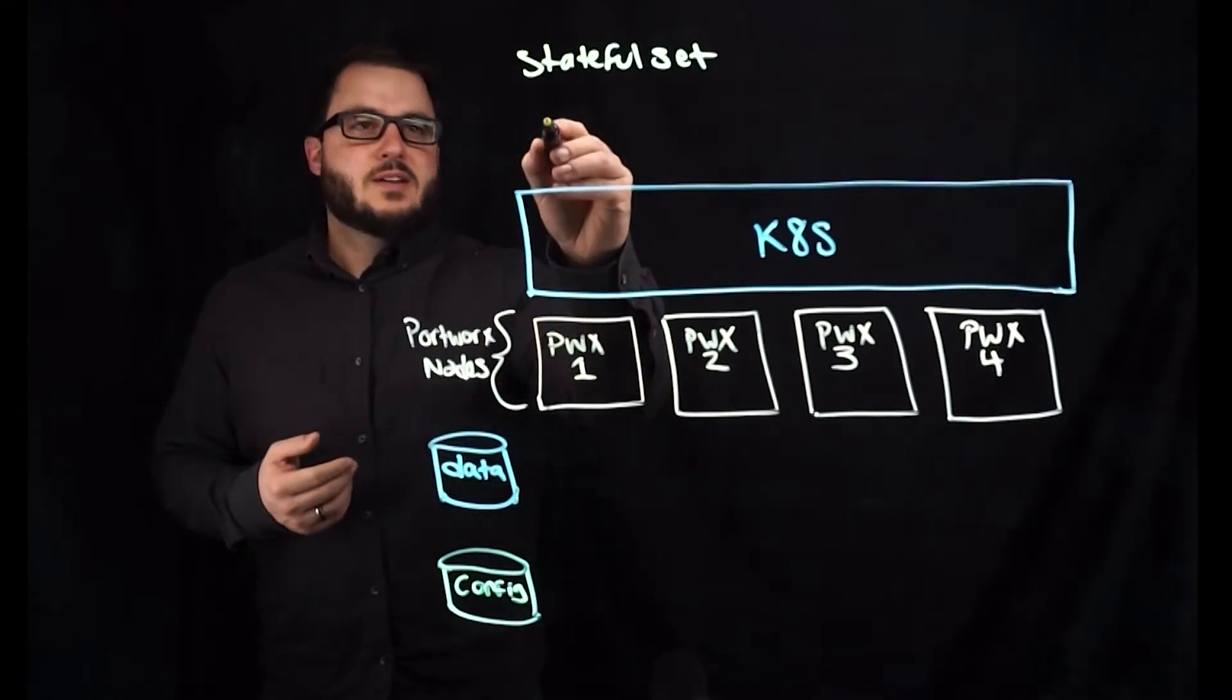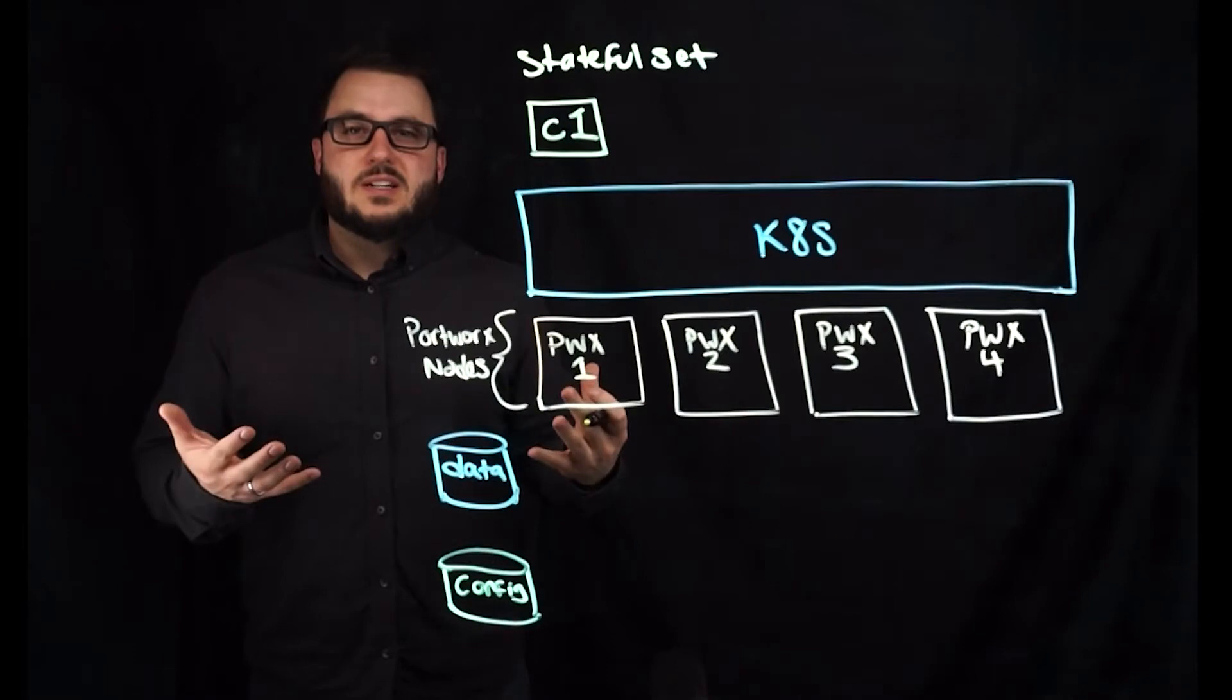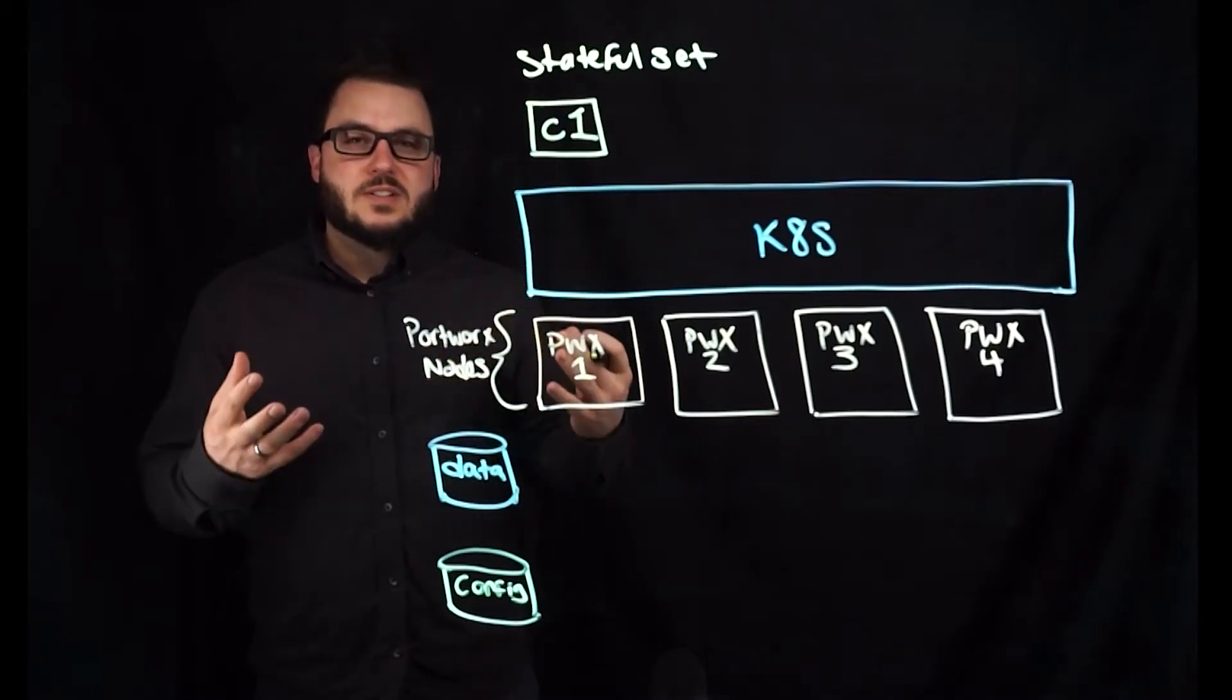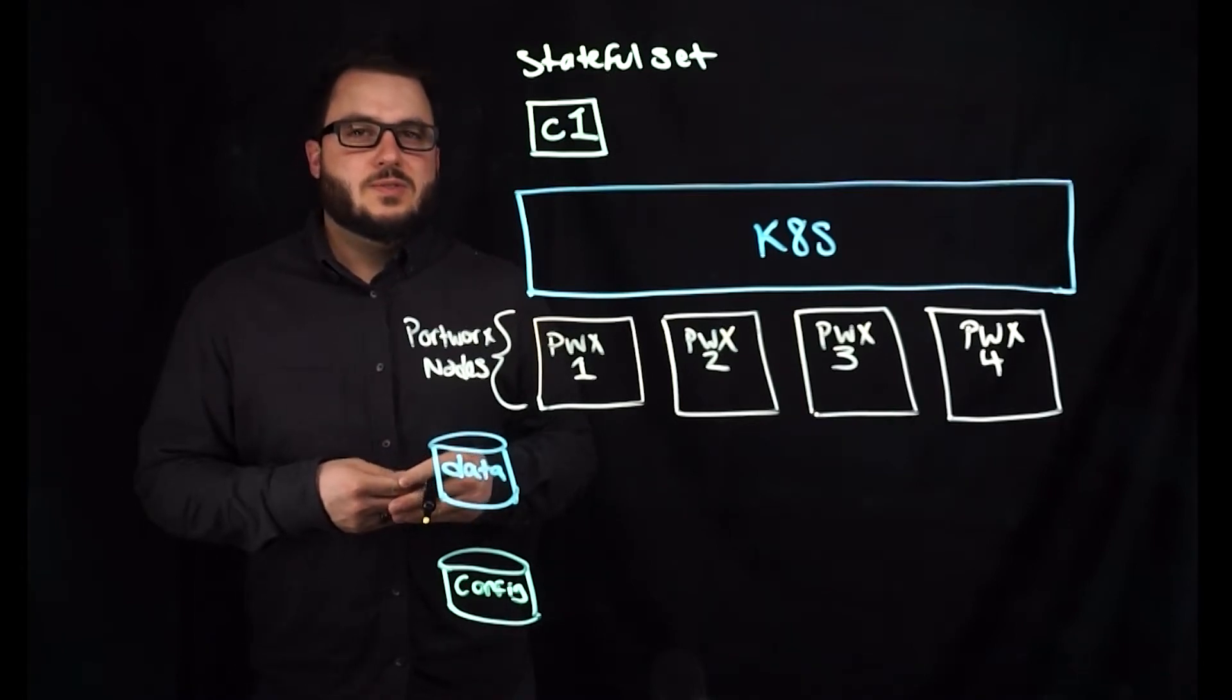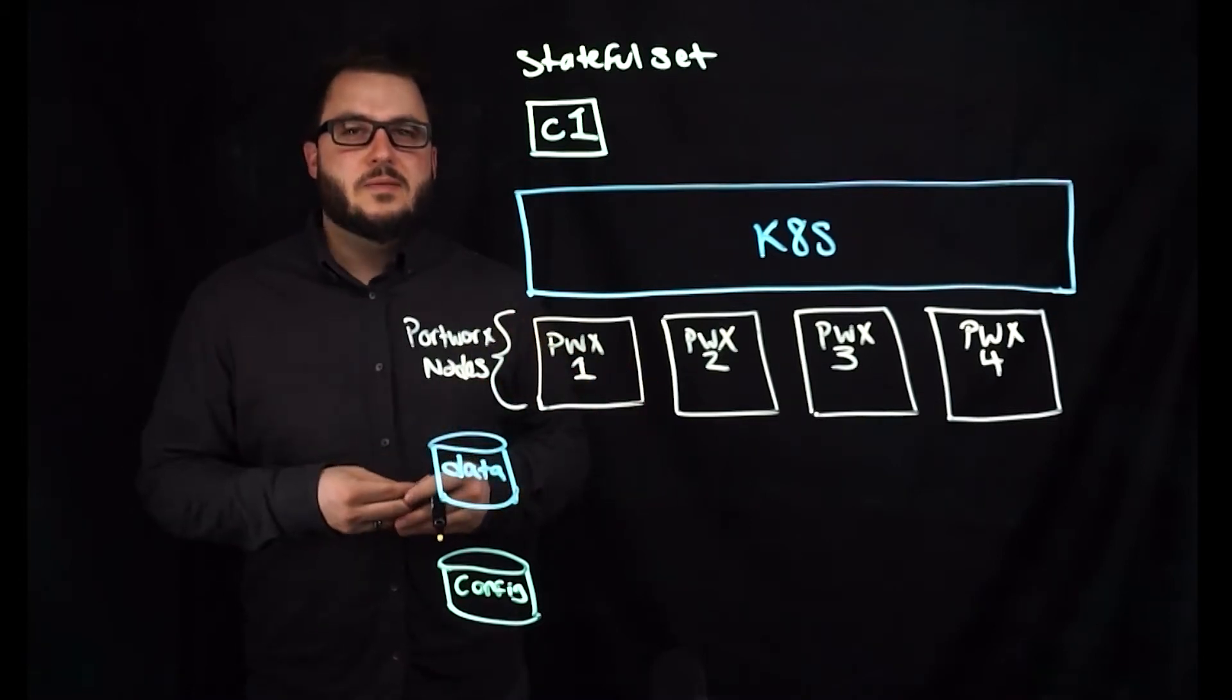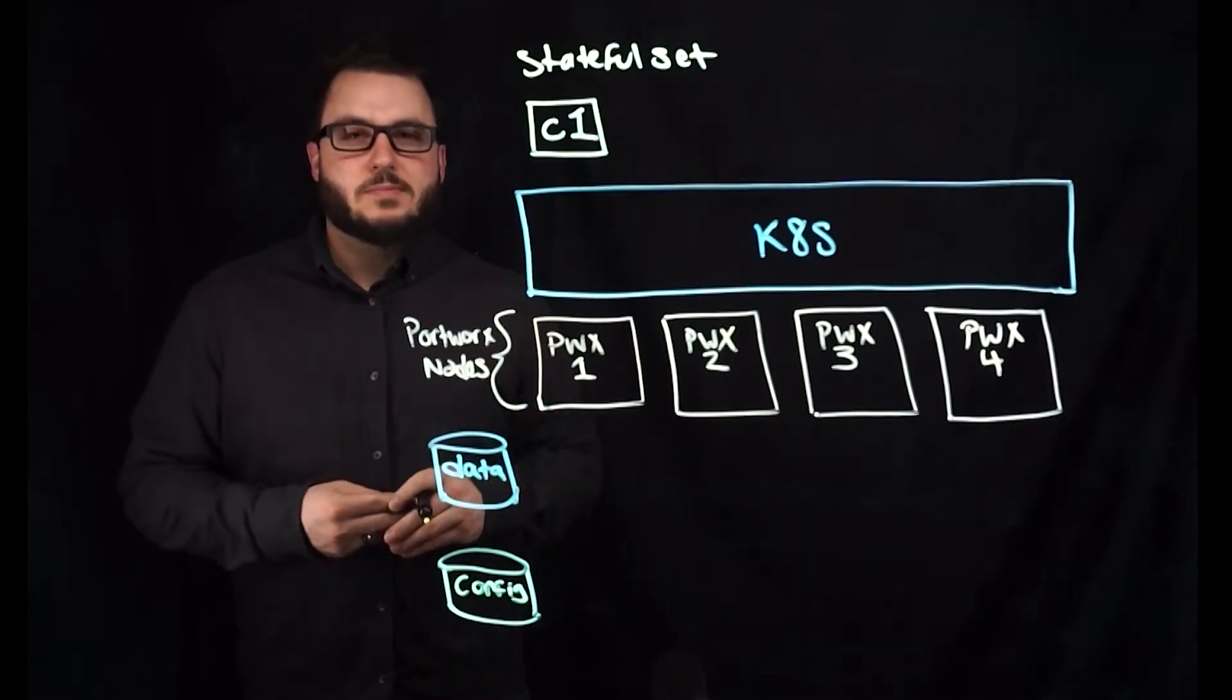So say the application we're going to be dealing with today is Cassandra. Cassandra comes up with a seed node and subsequent nodes need to be aware of the seed node address. So the first node needs to be set up first and be fully ready until the next one allows you to refer to the first one. So this is what stateful set allows you to do, among other things, but ordering is definitely one of them. And we're going to be using that example because it does play relevance to volume placement strategies.